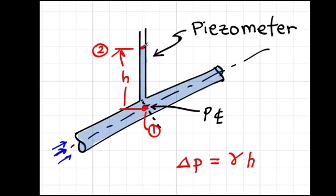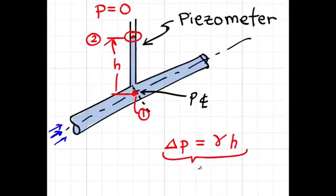Now at point two, that would be right here, the pressure is zero gauge because the liquid is exposed to the atmosphere. So I can just set this equal to zero and the resulting equation I'll get is that the pressure at one, which is the pressure at the center line of the pipe,